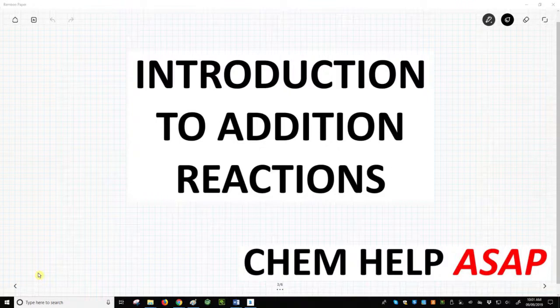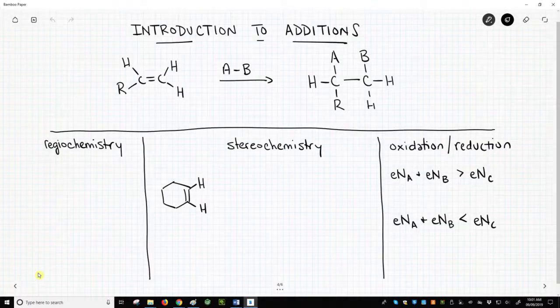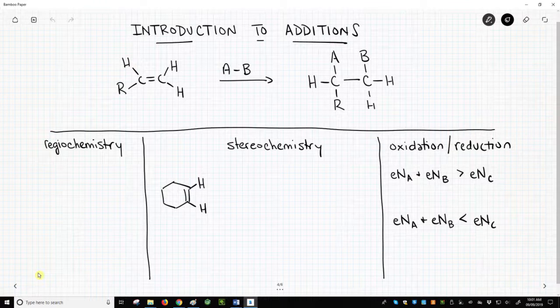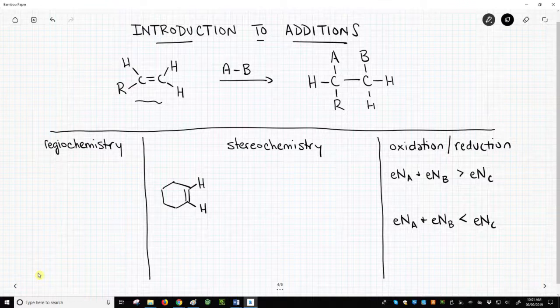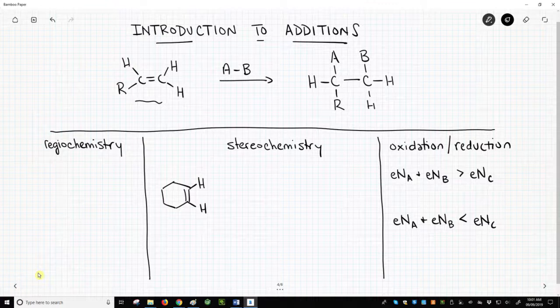For this playlist, we will focus on reactions of carbon-carbon pi bonds. On the screen at the top, we have a model reaction. We have an alkene and a hypothetical chemical reagent AB. In an addition reaction between these two molecules, the C-C pi bond breaks, as does the AB sigma bond, and we get formation of two new sigma bonds between the carbons and the AB atoms.